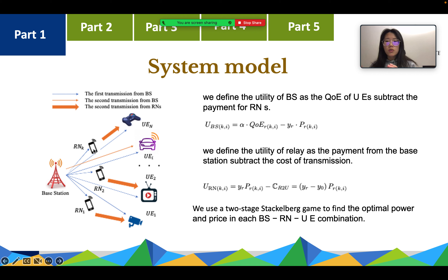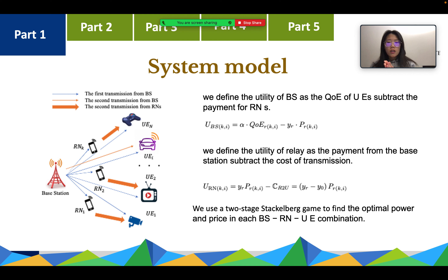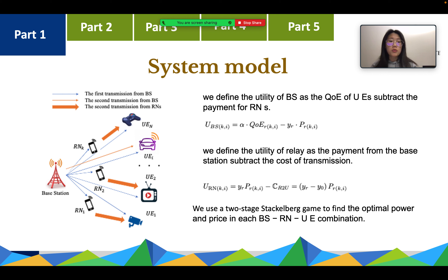For each relay, it can support user 1, 2, 3, or 4. The utility of the base station is defined as the quality of service of the user minus the payment to the relay. The base station provides payment to the relay, which then forwards the information to the user. The utility of the relay is the payment received from the base station minus the transmission cost, since transmission consumes energy from the relay device.